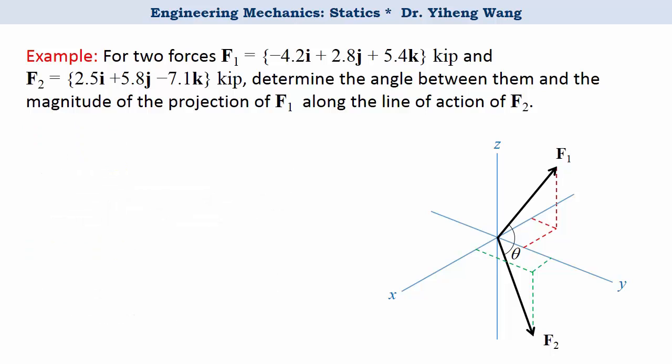Since now we know the dot product as well as the magnitudes, for angle theta, it can be calculated as inverse cosine or arc cosine of the dot product of these two force vectors divided by their respective magnitudes to be 118 degrees.